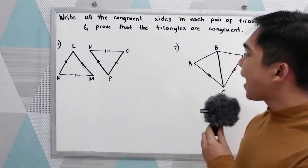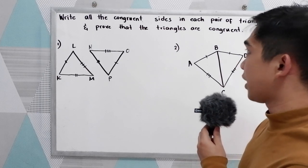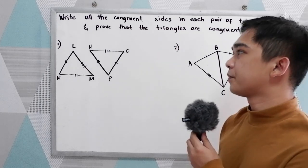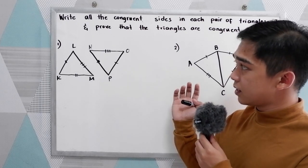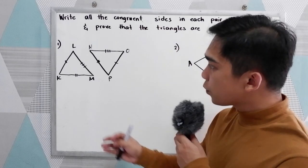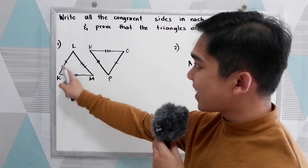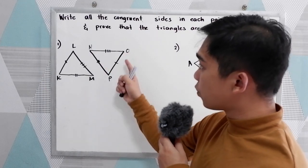Write all the congruent sides in each pair of triangles and prove that the triangles are congruent. So we have our number 1 and number 2. First, let us answer our number 1 problem. So we have a triangle KLM and triangle NOP.